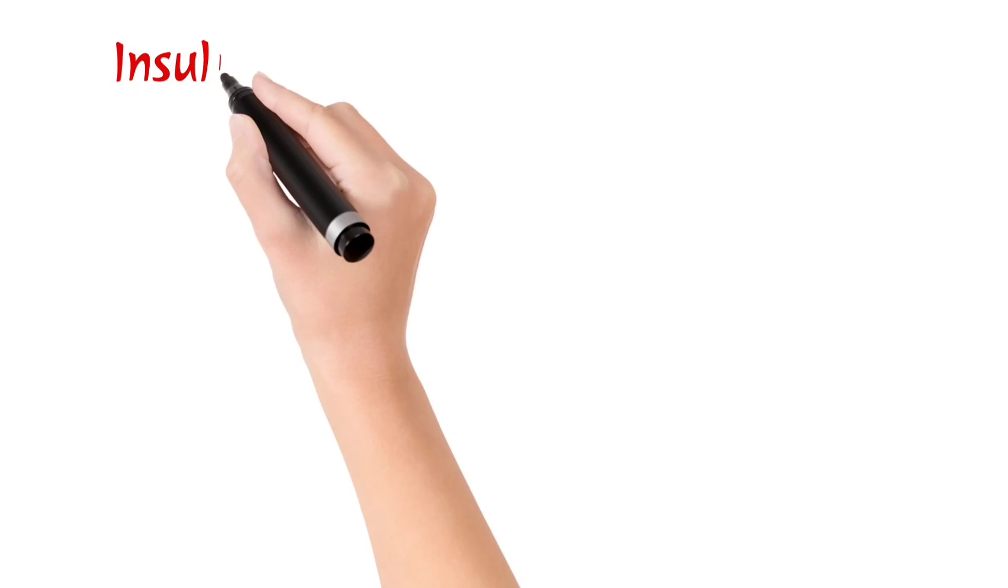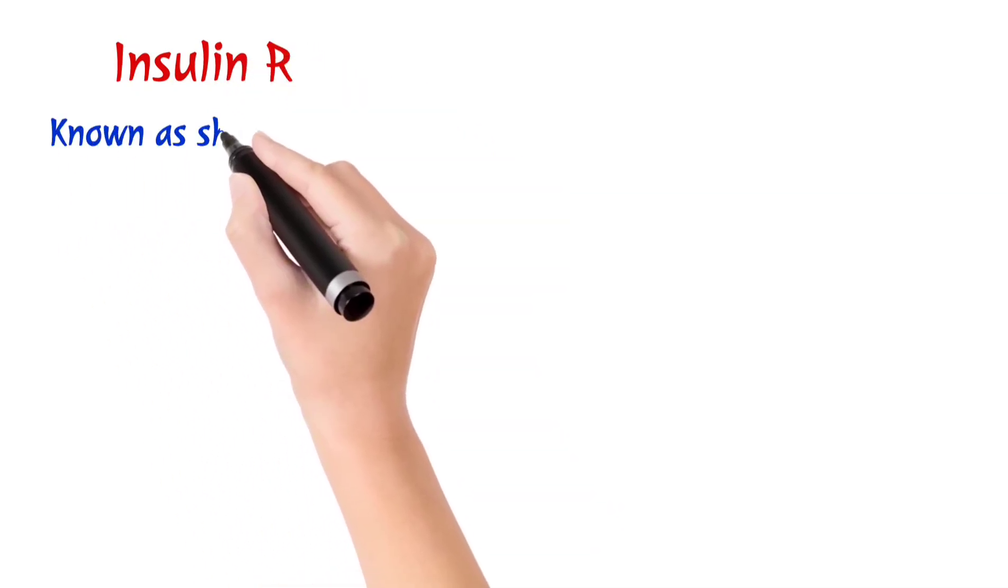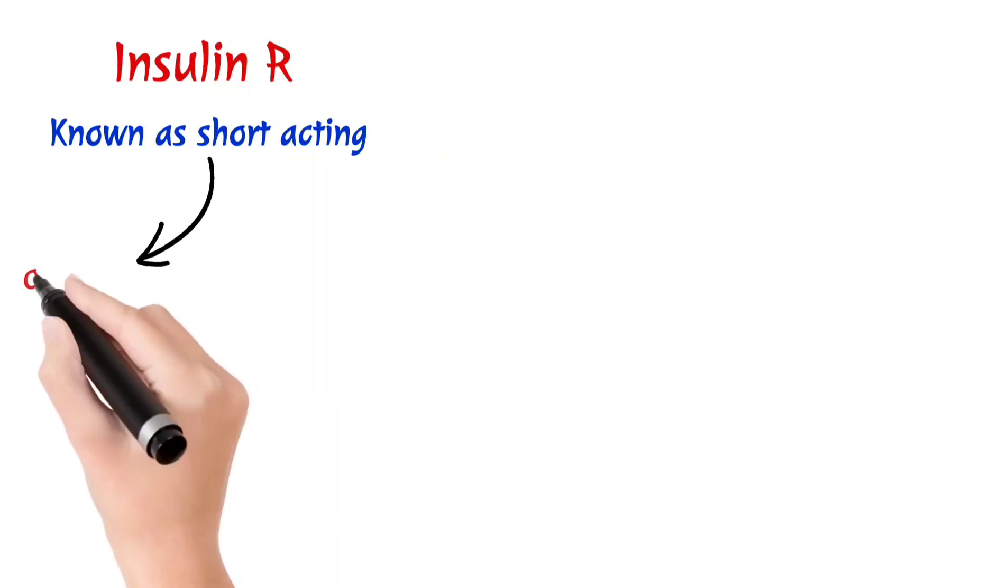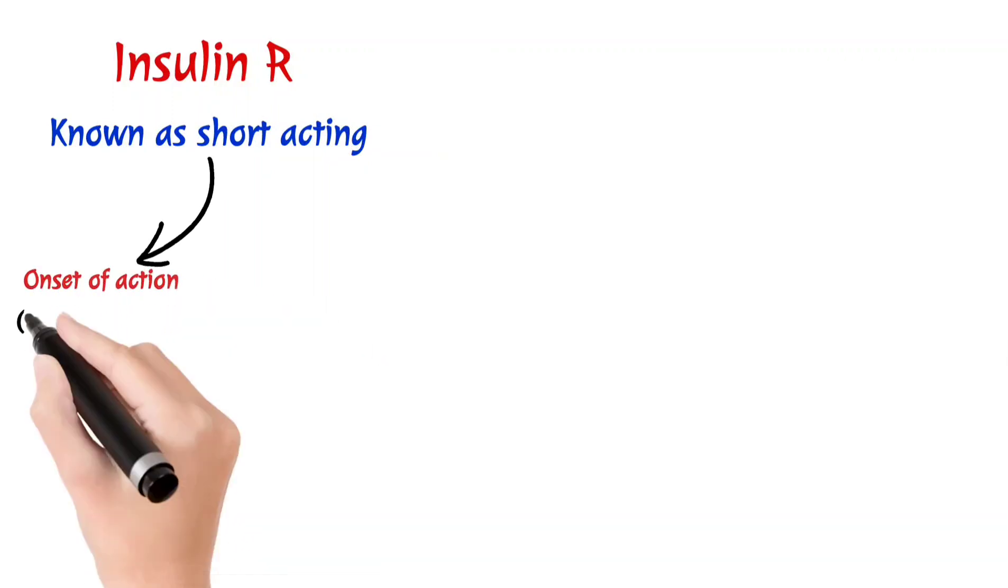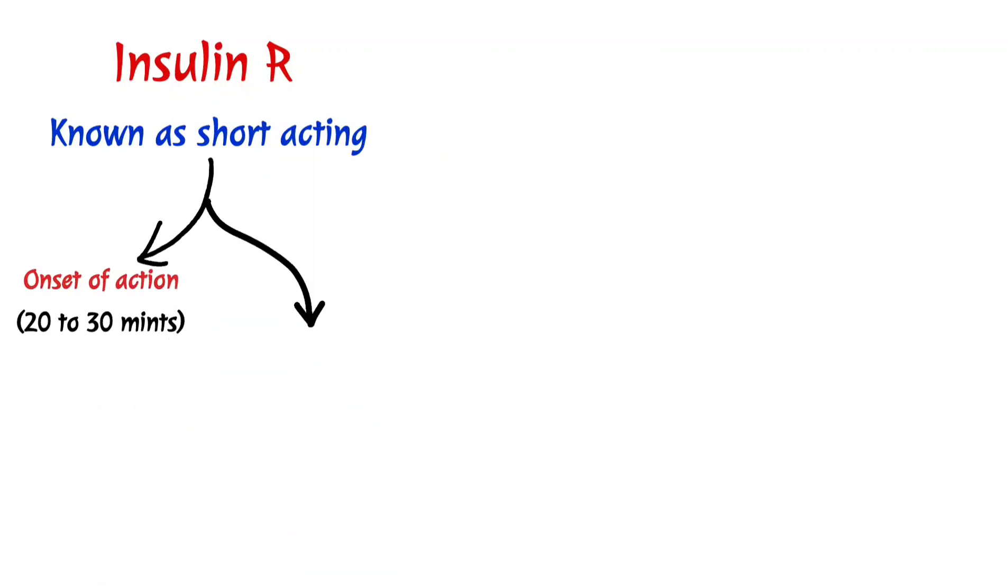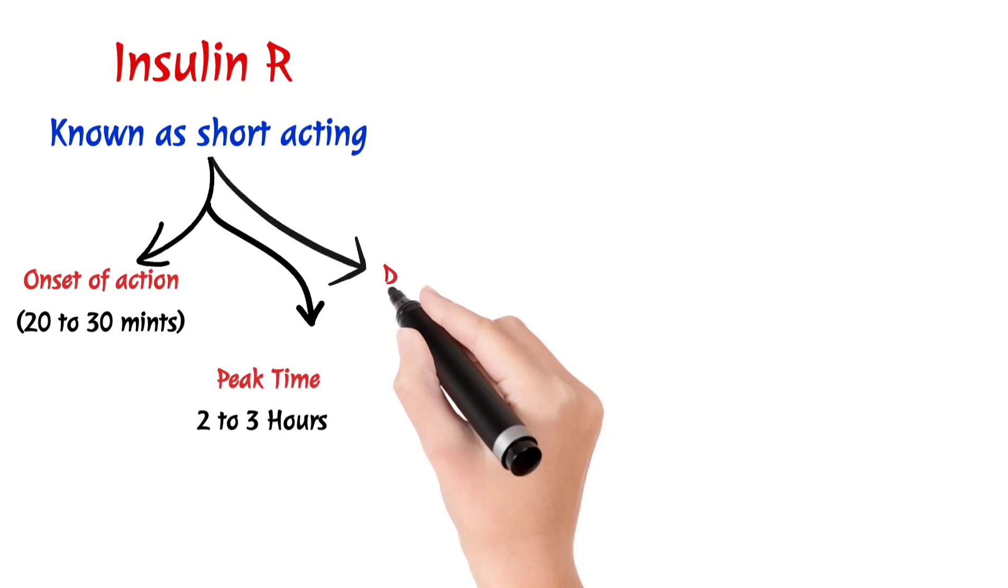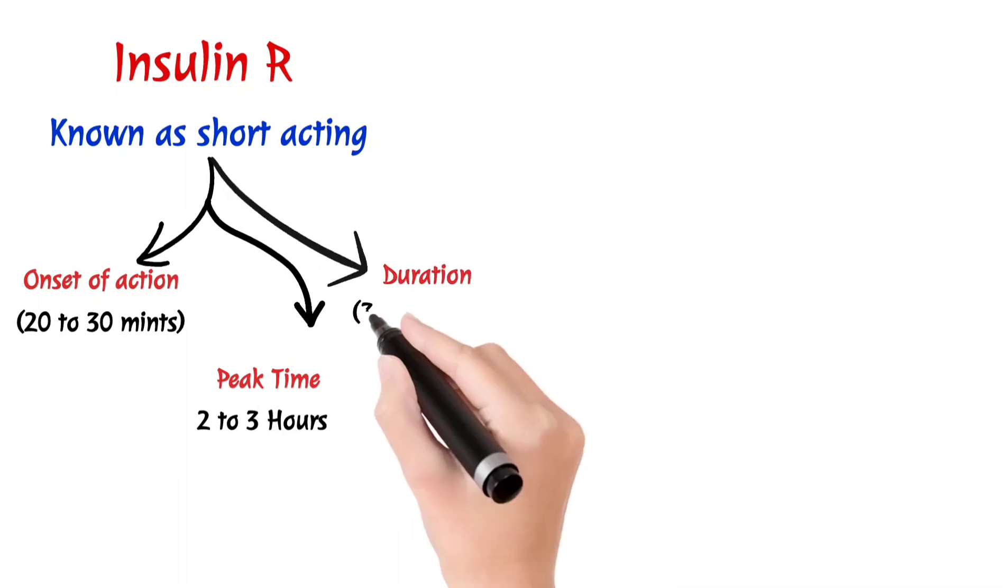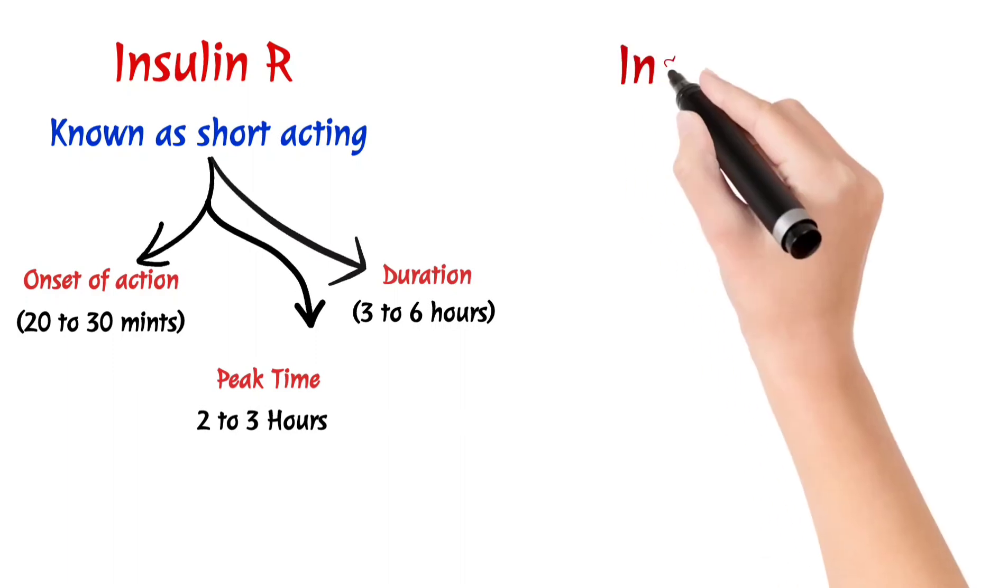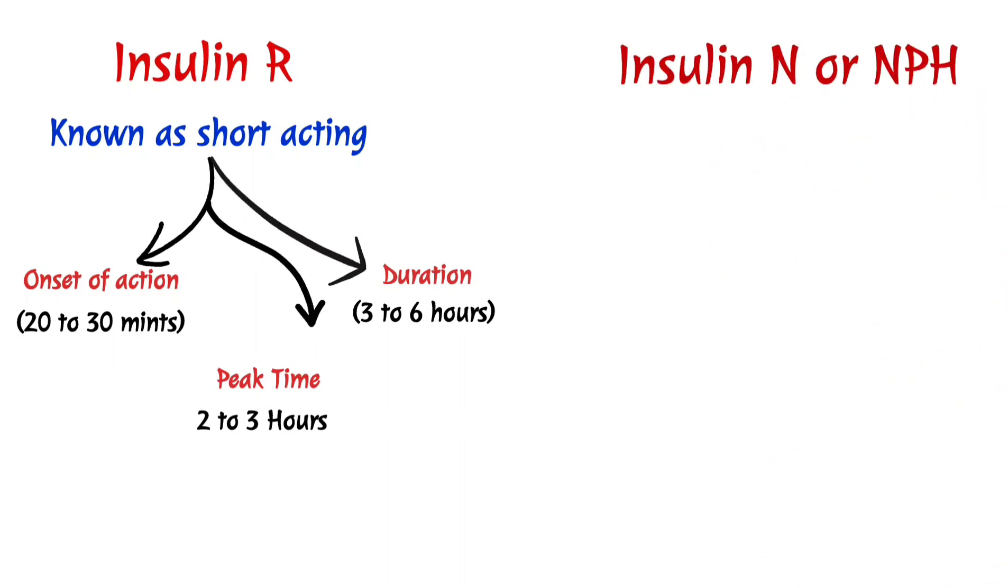Now let's look at the insulin actions. Insulin R is also known as short-acting. When we talk about the onset of action of Insulin R, it is 20 to 30 minutes after administration. Insulin R requires taking a meal as soon as possible. The peak time of Insulin R is 2 to 3 hours, and when we talk about the duration, it is 3 to 6 hours.